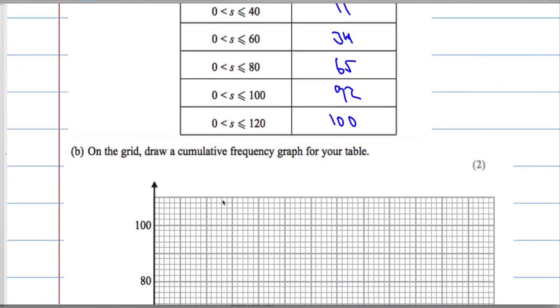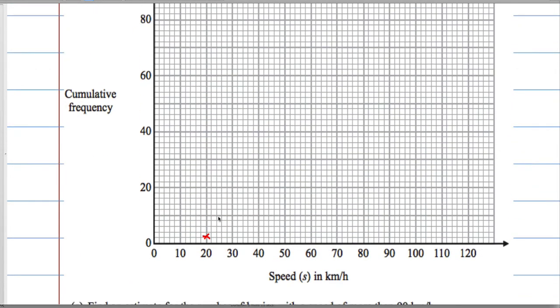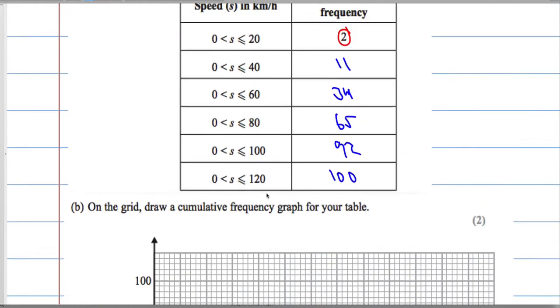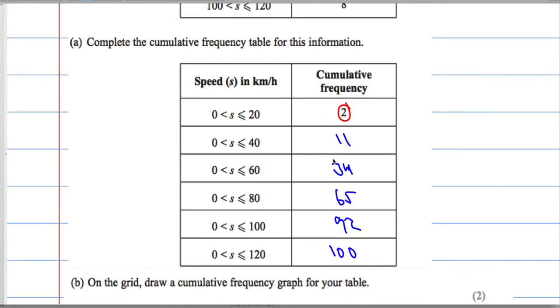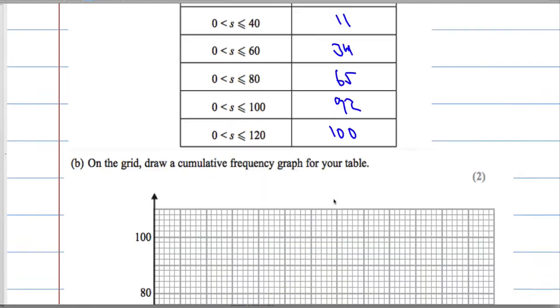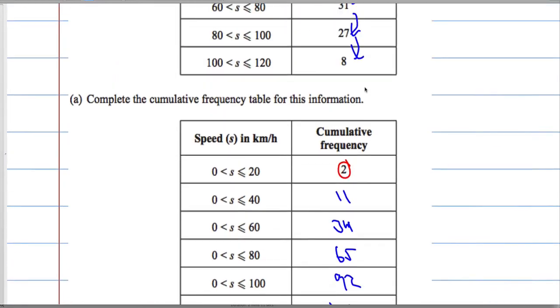Then the next one is 11 and 40. There's 40, there's 10, that would be 11 there. Next one is 60 and 34. 60 and 34, that's 30 there, 32, 34. Then 80 and 65. 80 and 60, that's 70, so that would be 65 there in the middle.